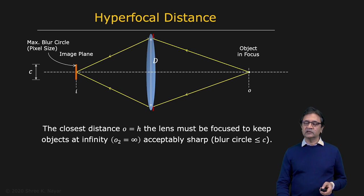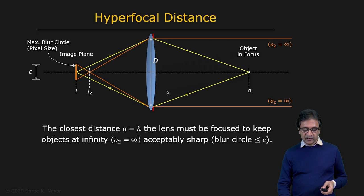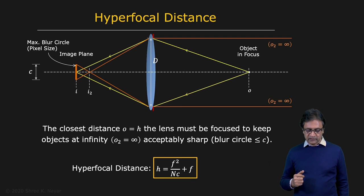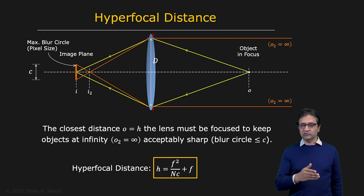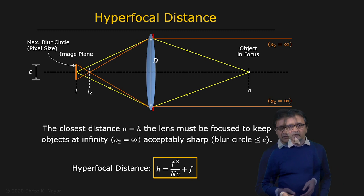When you consider a point at infinity, parallel rays come to the lens, converge, and then diverge again. The blur circle they create on the image plane is exactly equal to the size of a pixel. The focus distance O for which this is true is the hyperfocal distance, and we compute it by plugging O2 equal to infinity into our depth-of-field equation. We get H, the hyperfocal distance, equal to F-squared divided by n times C, plus F, where F is the focal length, n is the F-number, and C is the pixel size.